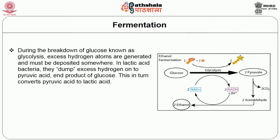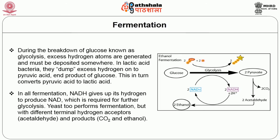During the breakdown of glucose, we should know glycolysis. Glycolysis is one of the pathways where glucose is utilized and converted to energy. It takes place in the cytoplasm of cells and is a part of fermentation. In glycolysis, excess hydrogen atoms are generated. In lactic acid bacteria, they dump excess hydrogen onto pyruvic acid, the end product of glucose. Lactic acid bacteria are anaerobic bacteria catalyzing this process, converting pyruvic acid to lactic acid. In all fermentation, NADH — nicotinamide adenine dinucleotide reduced — gives up its hydrogen to produce the oxidized form NAD, which is required for further glycolysis.